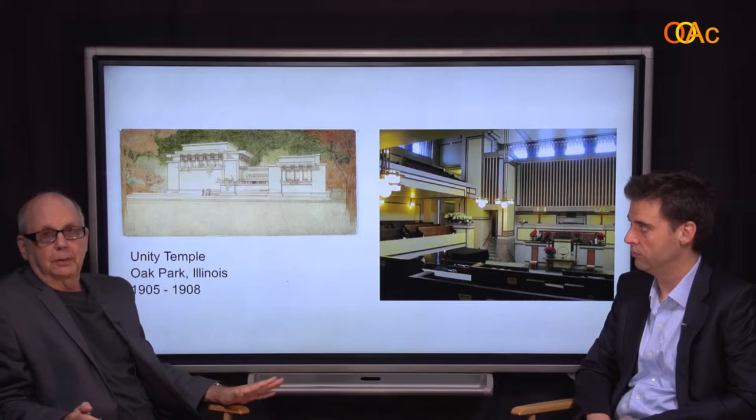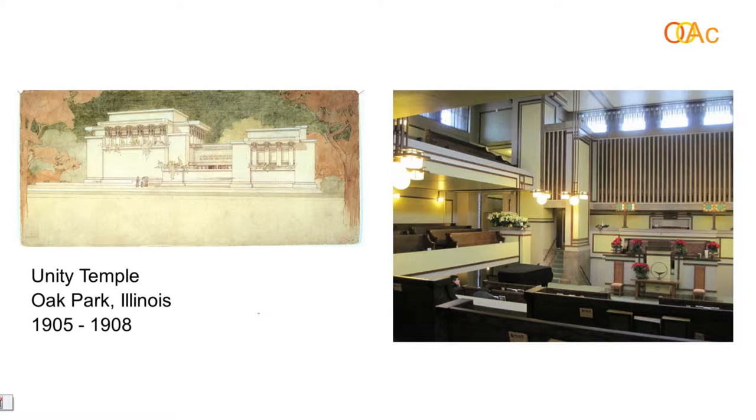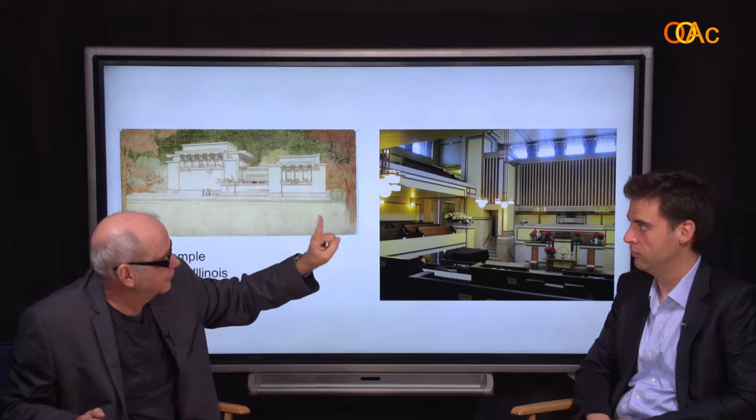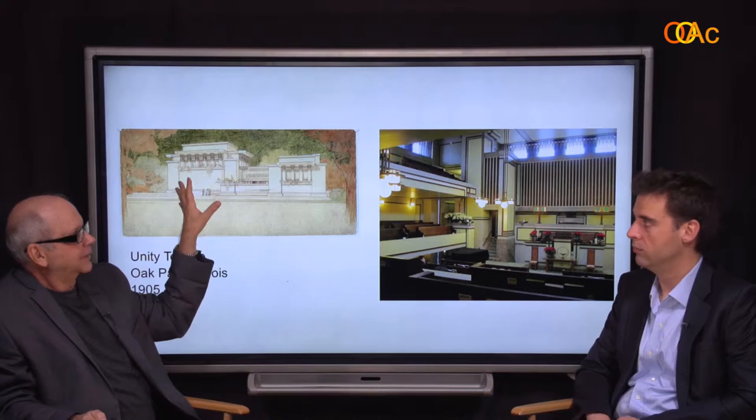Around the same time, just a few years later, we have Unity Temple in Oak Park — a Unitarian church right near Frank Lloyd Wright's own home. What do we have? We have a major space, a minor space, entrance in between. The major space has balconies running around and a skylight in the middle.